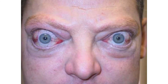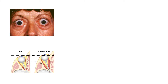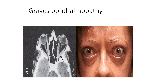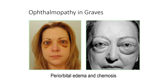Graves ophthalmopathy — or exophthalmos — is the Graves eye disease associated with Graves disease. It involves inflammation, hypertrophy of retro-orbital muscles, and possible optic nerve compression or atrophy. Symptoms include eye discomfort, grittiness, excessive tear production, photophobia, diplopia, and decreased visual acuity. Signs include exophthalmos, proptosis, ophthalmoplegia, and periorbital edema. MRI findings of Graves ophthalmopathy and periorbital edema with chemosis can be observed.